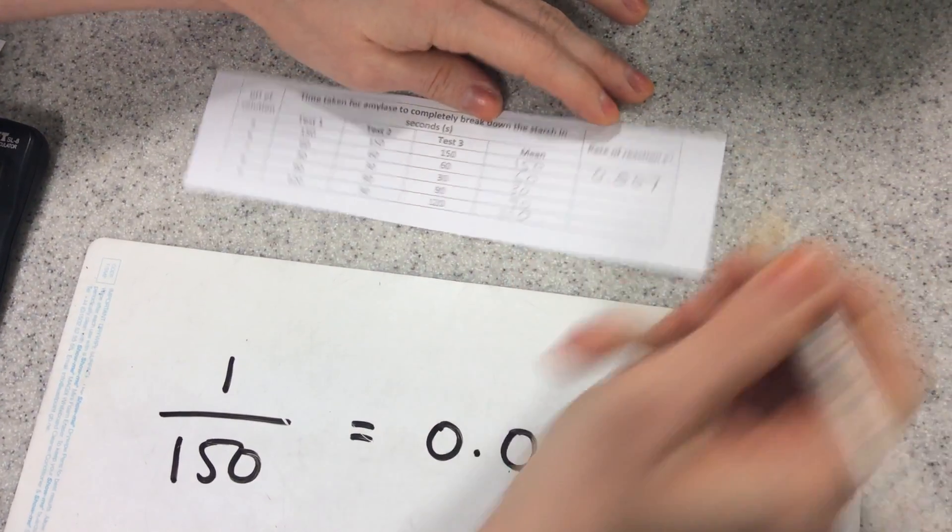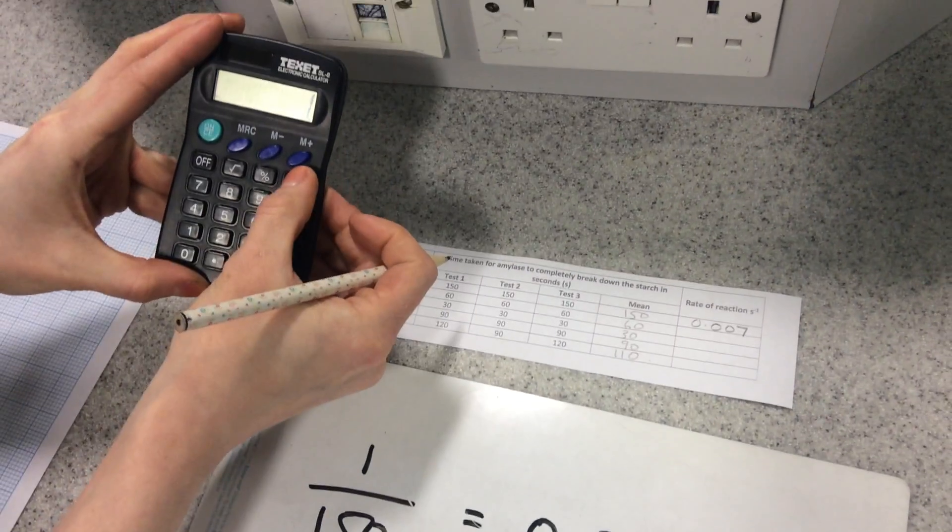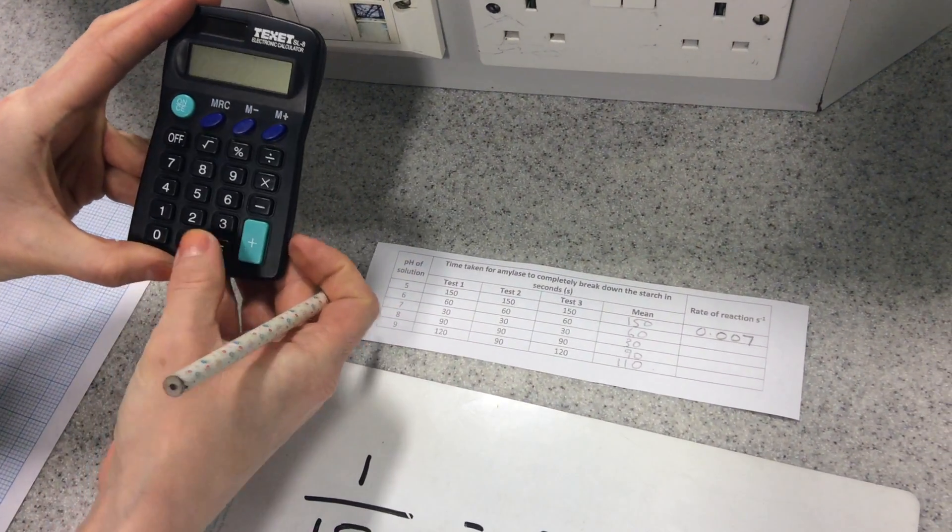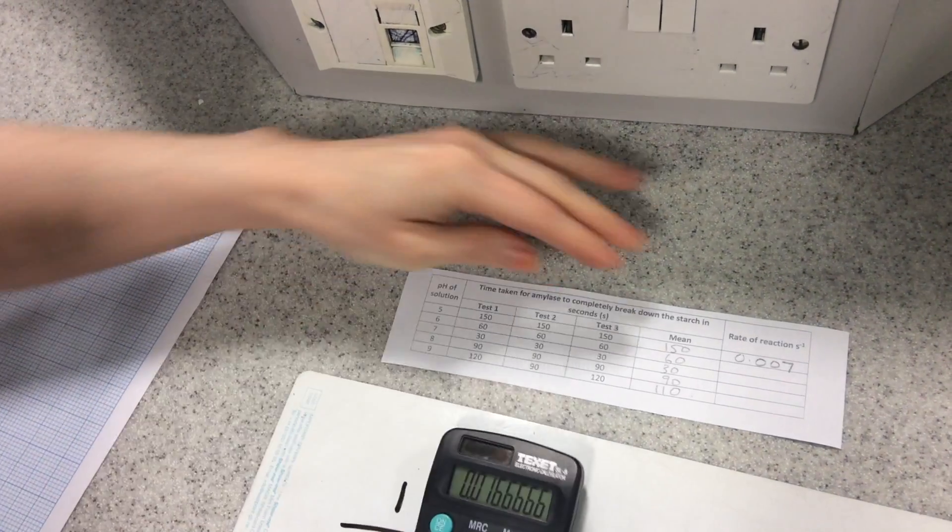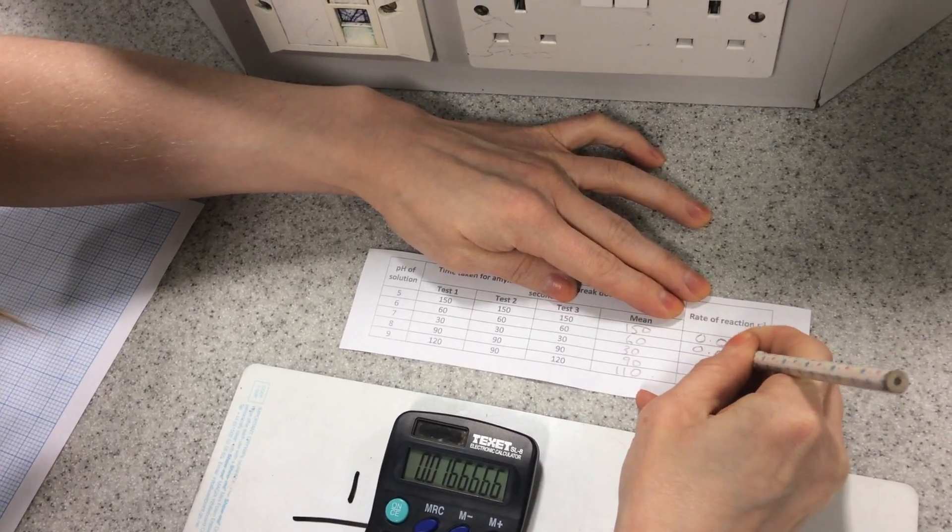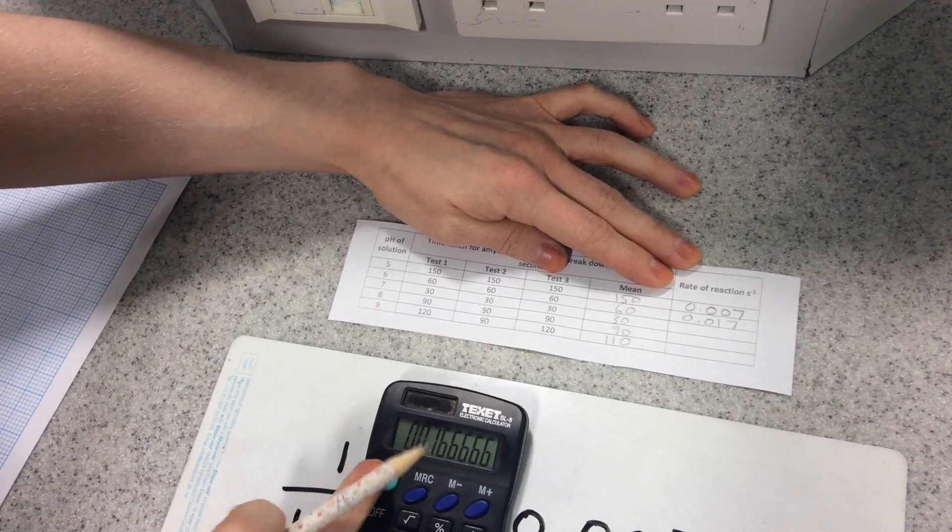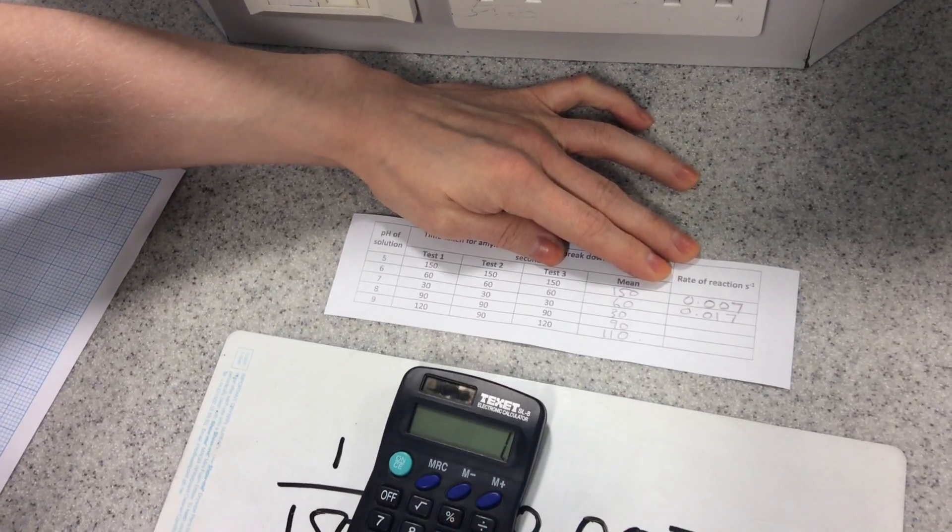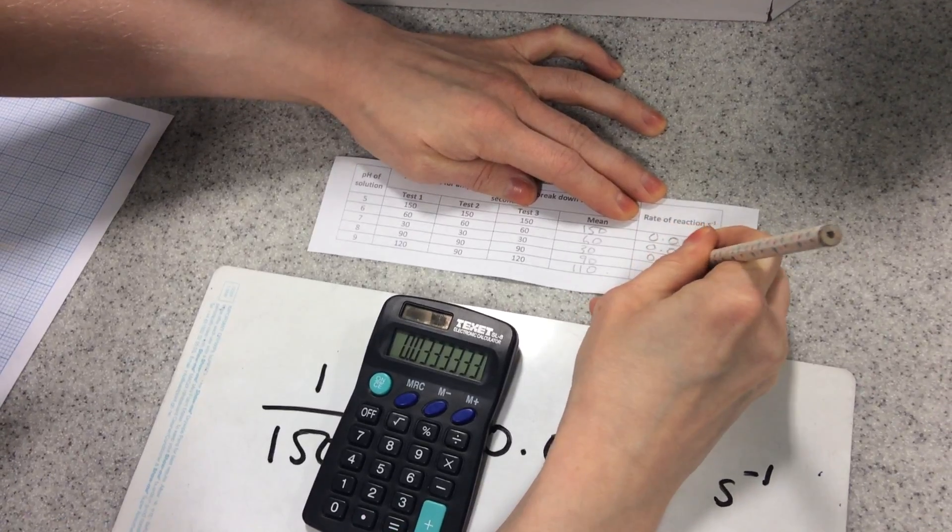0.007. My next one I'll do on my calculator, 1 divided by 60 equals, and I want it to three decimal places, so we're going with 0.017, because I've rounded that to a 7. My next one, 1 divided by 30 equals 0.033,